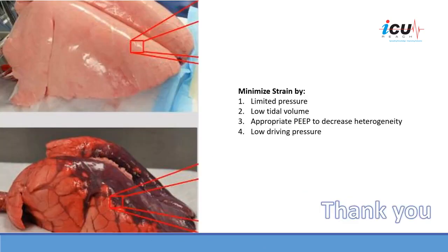When we talk about protective lung strategy, we talk about limited pressure, low tidal volume, appropriate PEEP to decrease heterogeneity, and low driving pressure. All of these interventions are aimed at minimizing strain at the alveolar level. Protective lung strategy is a strategy that decreases stress in order to minimize strain at the alveolar level. I hope I was able to explain this concept clearly to help you understand exactly what we mean by protective lung strategy.